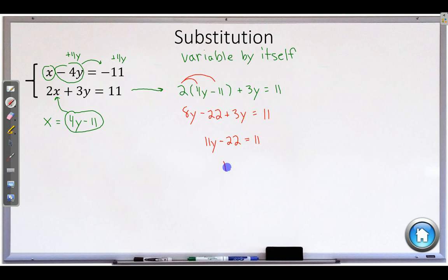Get the y by itself. Add 22. So 22 plus the 11 is 33. That comes out quite nicely. y is equal to 3 when you divide.